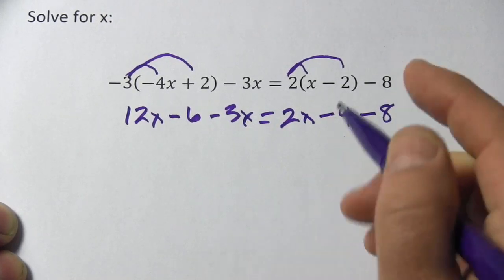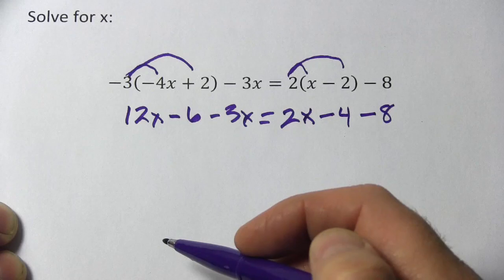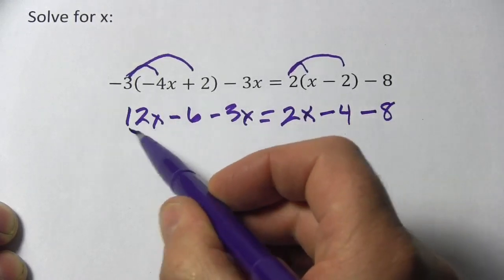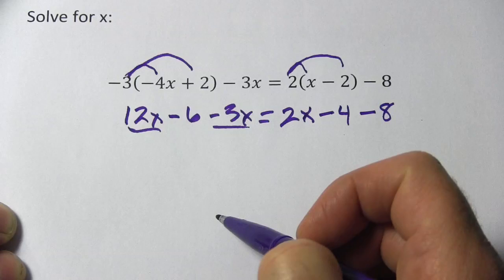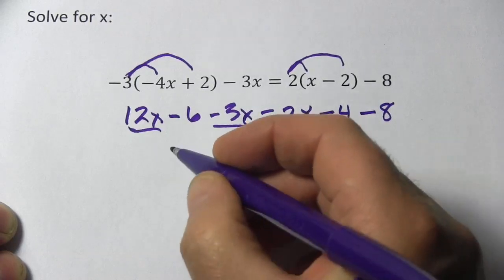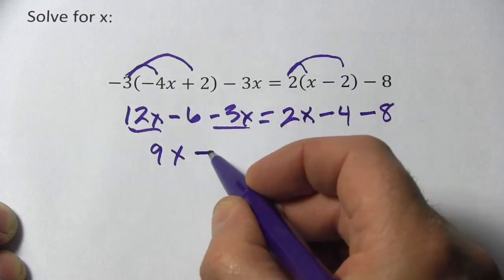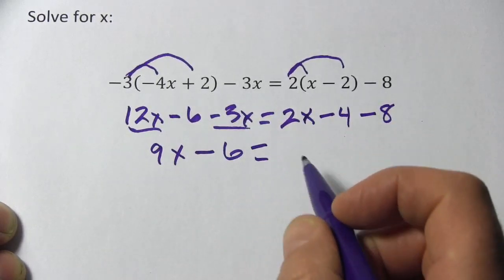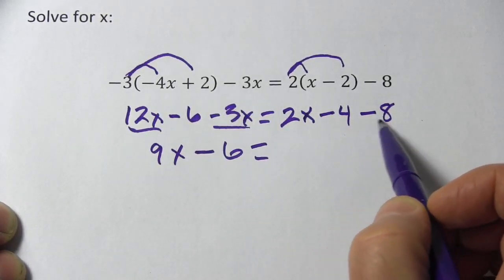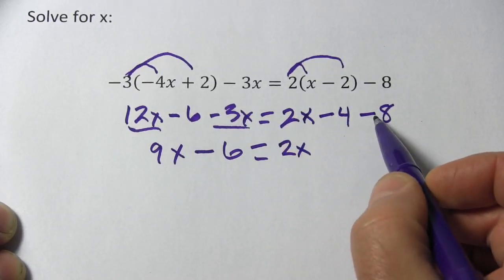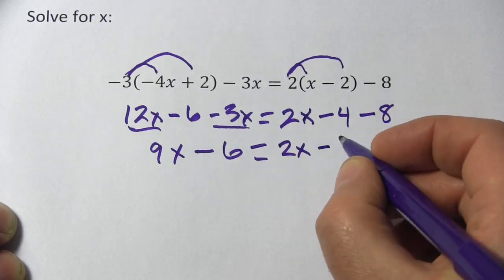Alright, we've done the distribution. The next step is to combine our like terms on each side of the equal sign. So over here, I've got 12x and negative 3x. 12 minus 3, that's 9x. And there's no other number on this side of the equal sign. So the negative 6 just stays like it is. Here, the 2x is the only x term. So we'll put 2x. And then negative 4 minus 8 is negative 12.